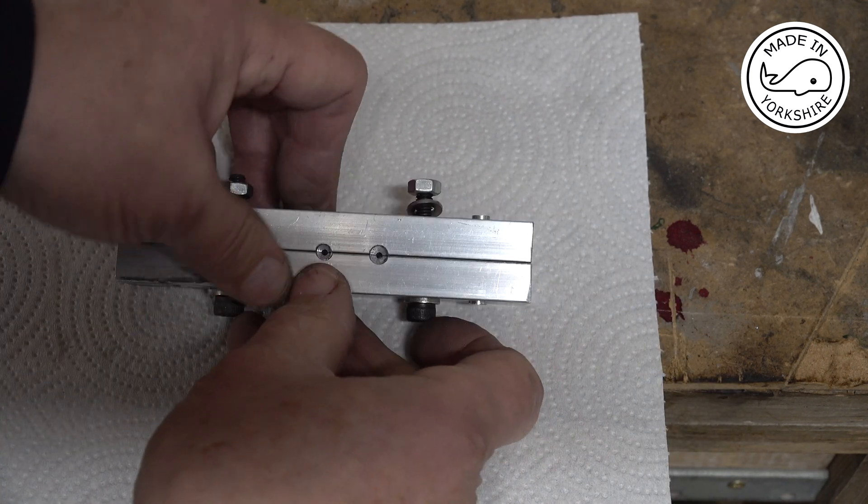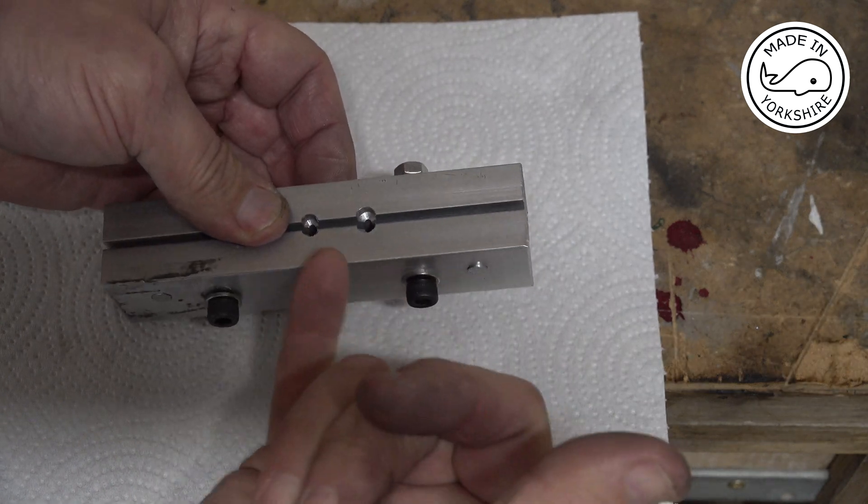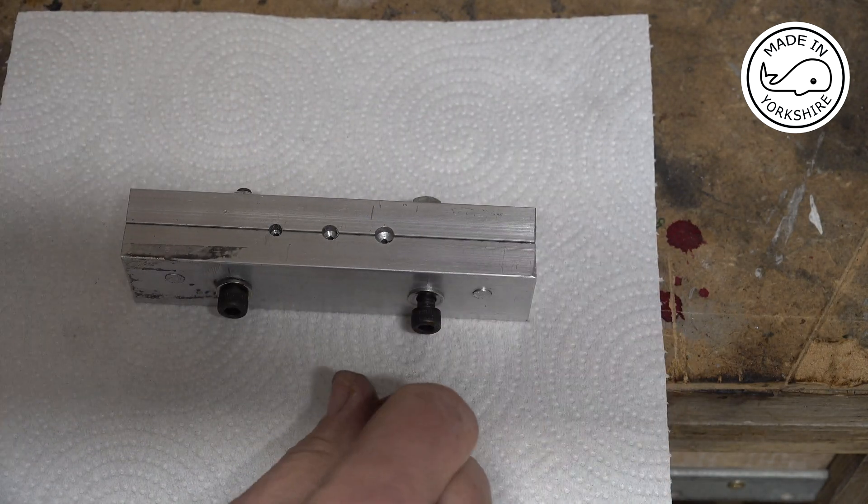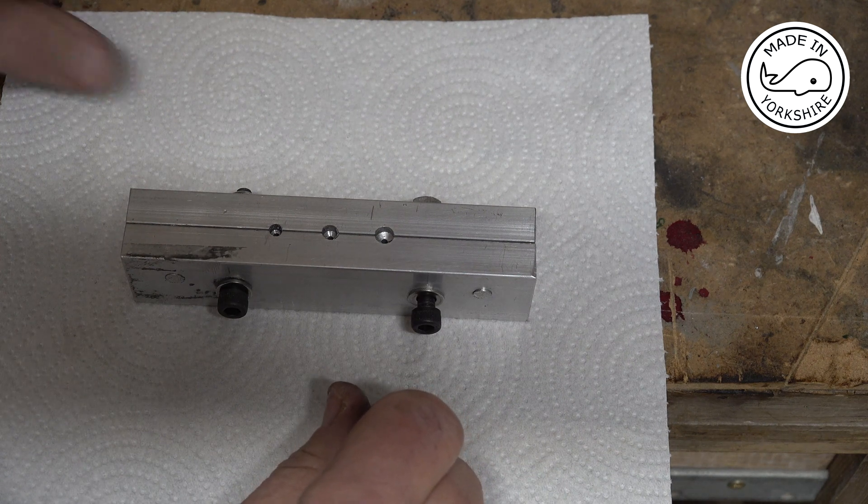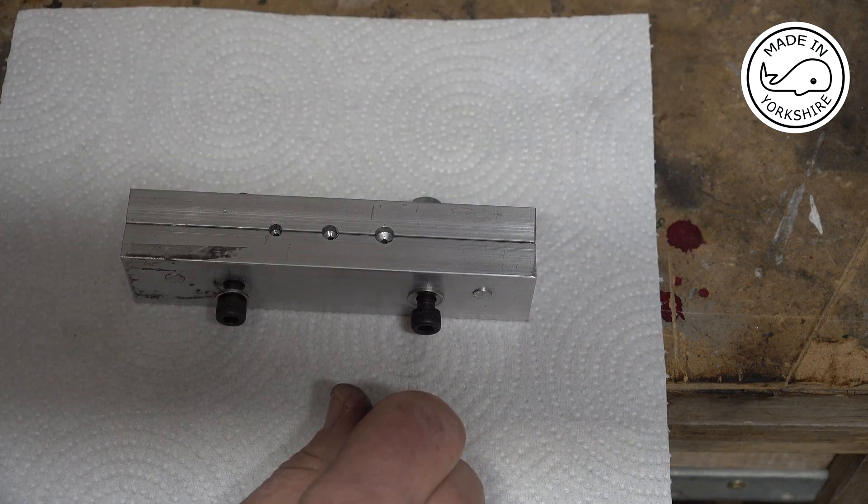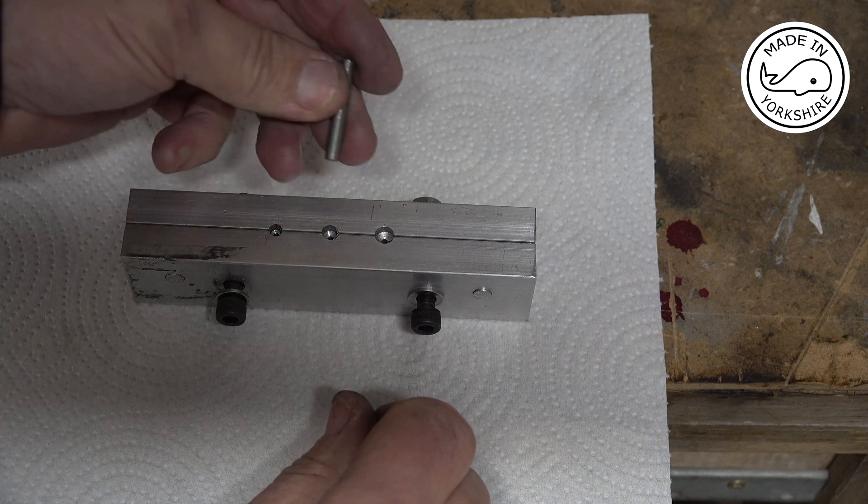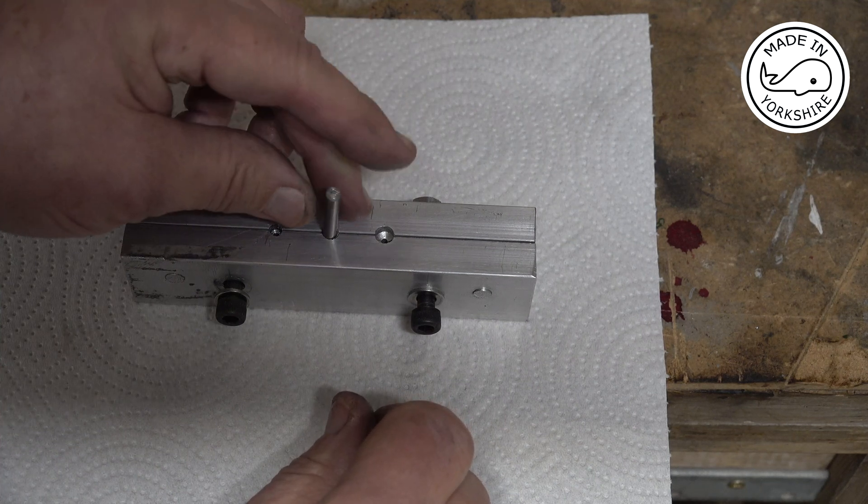So what you do is you undo it, put a cable in, clamp it up again and then use a little punch, which I've made a couple of. These just fit inside the holes.